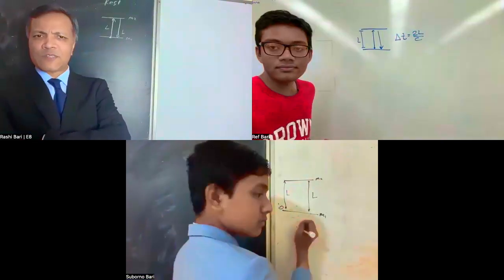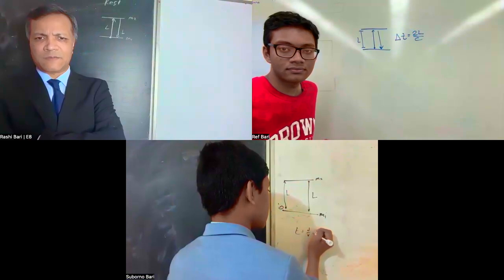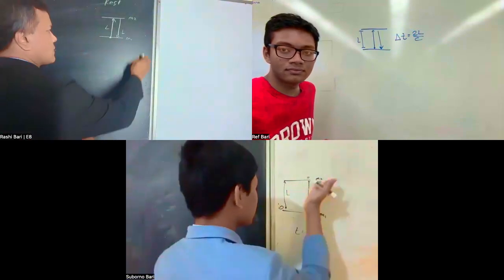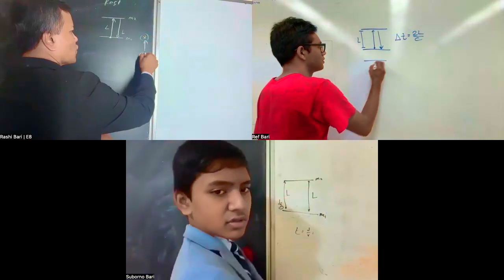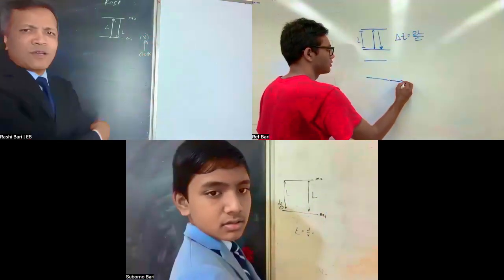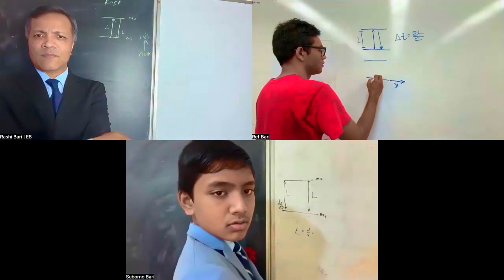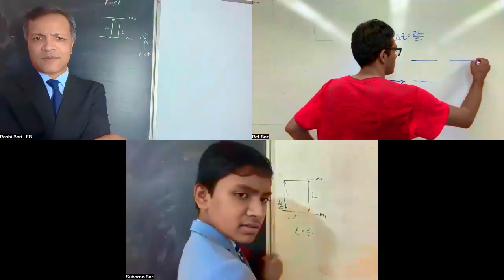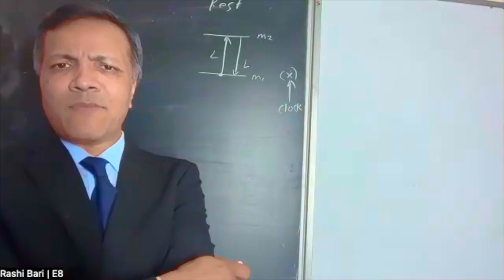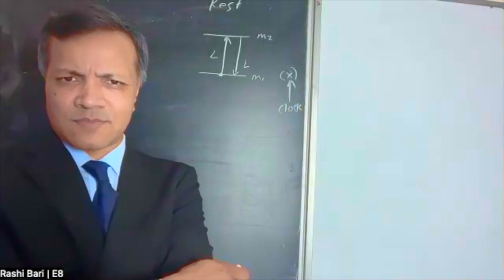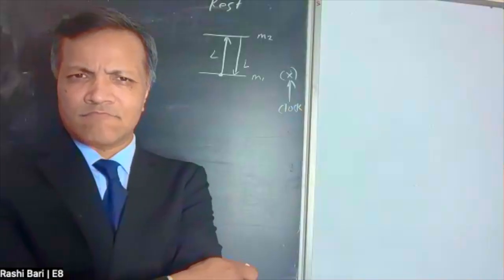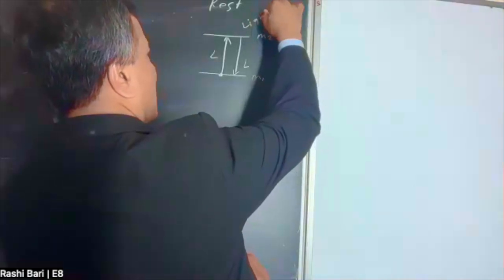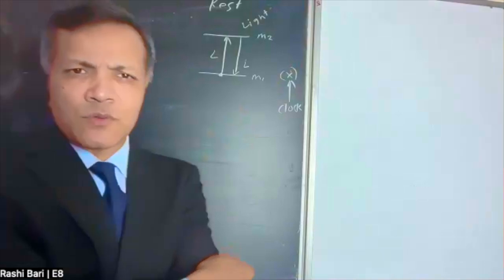So if the height of the mirror is L, then the time is 2L over c. What is moving in the horizontal direction and what is moving in the vertical direction, Isaac? Nothing is moving in the horizontal direction. The clock is moving in the vertical direction. The clock is moving in the horizontal direction. Which clock? The mirror clock, the light clock. Ref, what is moving in the vertical direction? The photon. So light. Okay great.